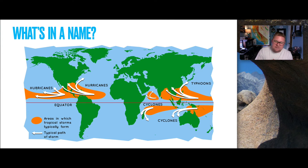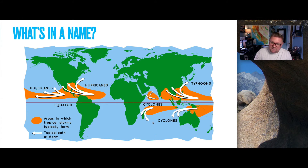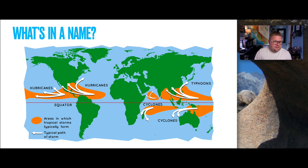Hurricanes, because of their size and the spin of the Earth, deflect towards the right in the Northern Hemisphere and to the left in the Southern Hemisphere. You can see the names — hurricanes, typhoons, and cyclones — labeled within their respective areas on this diagram.